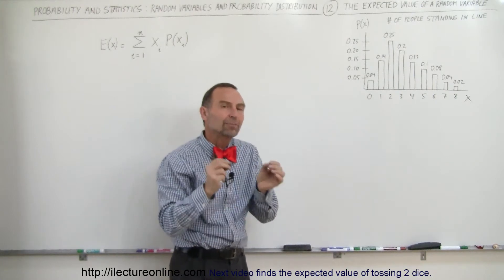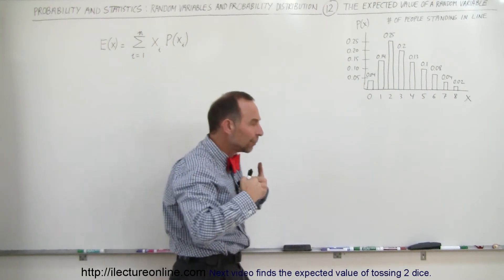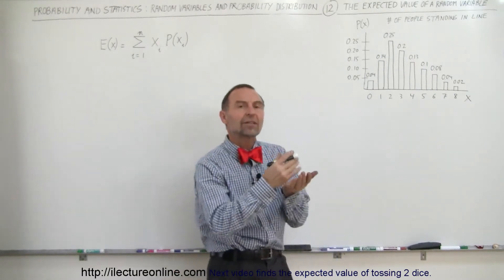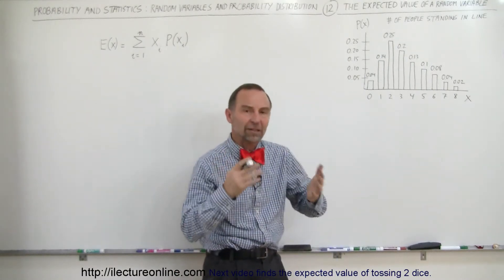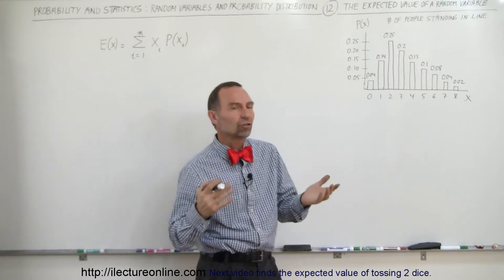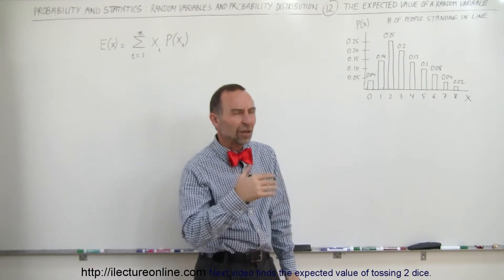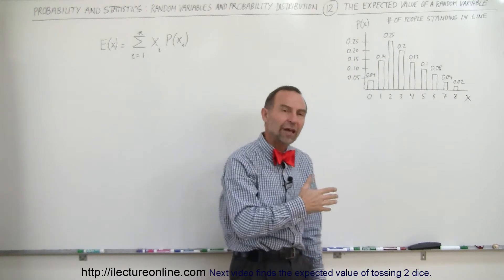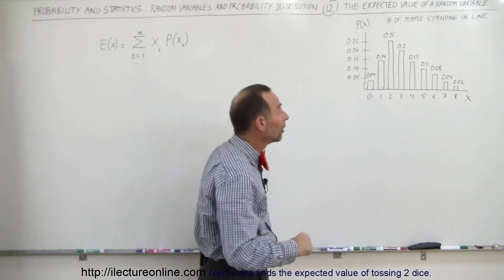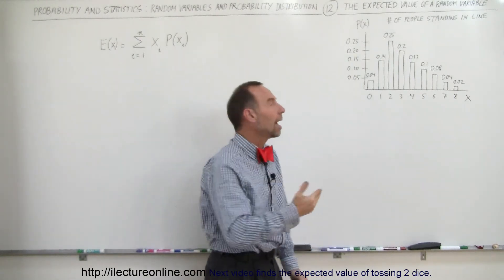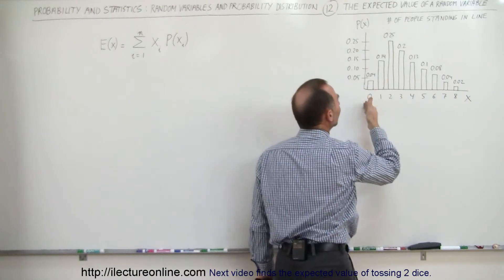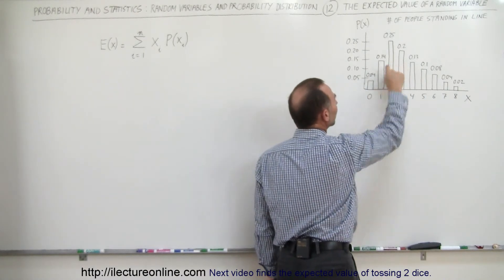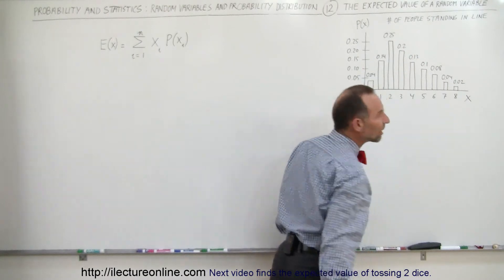So what is the expected value? When you go out at random and look at the number of people standing in line, what is the expected value — how many people do you expect to see on average? Why is that the expected value and not just the average? Because you have to weigh in the probability for each number. It's much more likely you'll see two people in line than eight people.